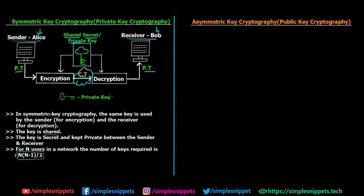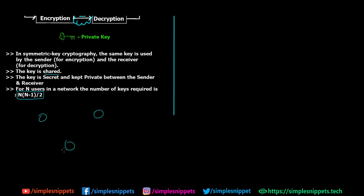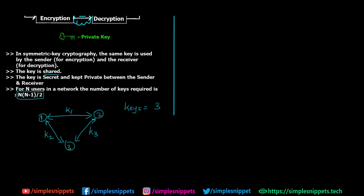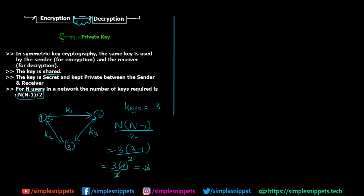Let's take a scenario with three people who want to communicate. There is one key shared between persons 1 and 2 (K1), one between 1 and 3 (K2), and one between 2 and 3 (K3) — so three keys total. Applying the formula: n × (n − 1) / 2 = 3 × (3 − 1) / 2 = 3 × 2 / 2 = 3. The formula confirms three keys are required.